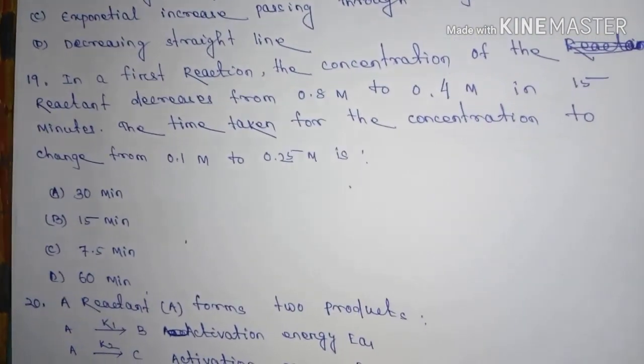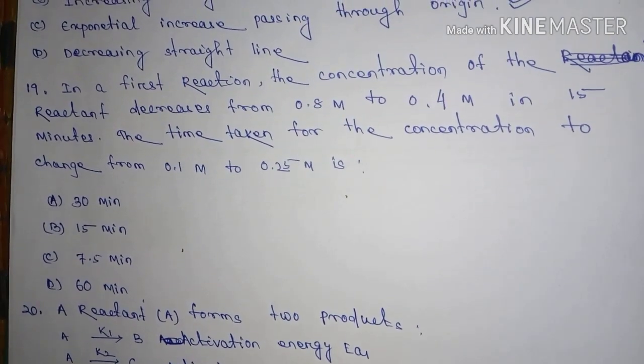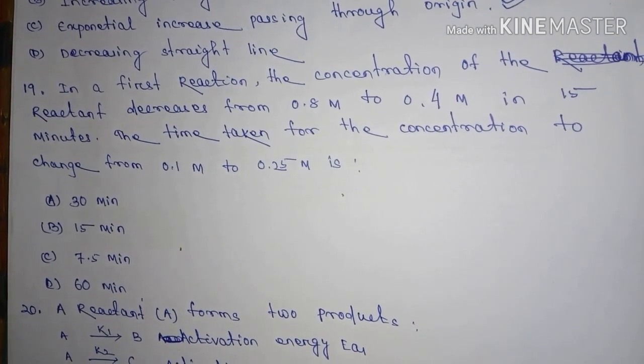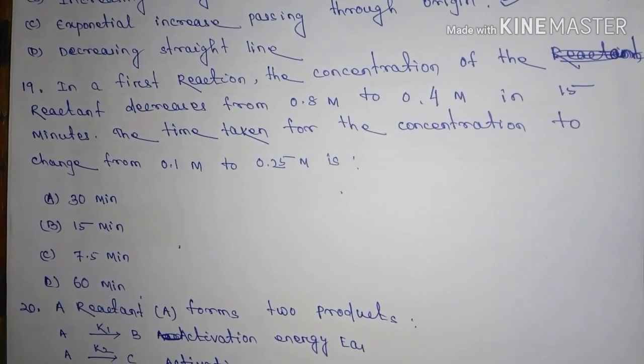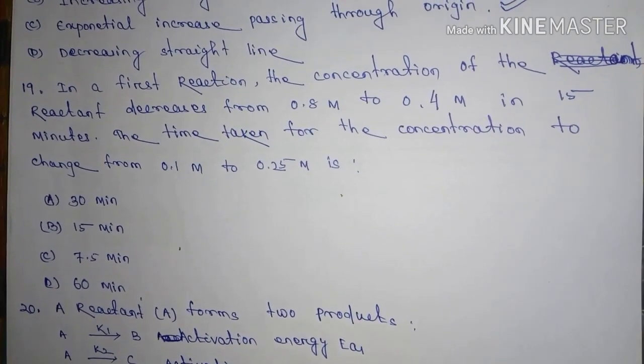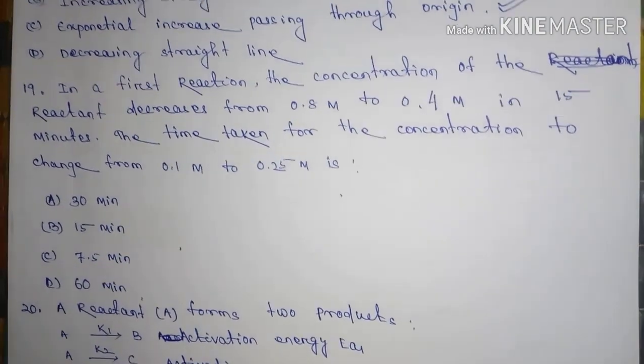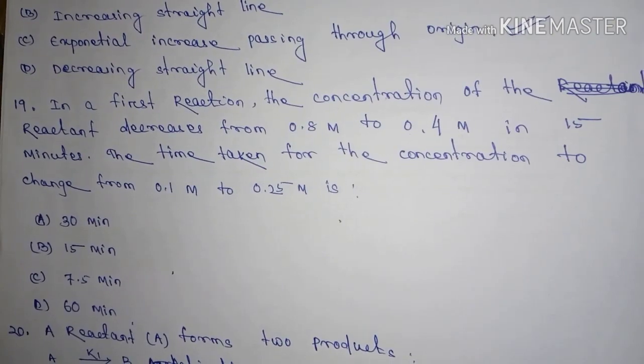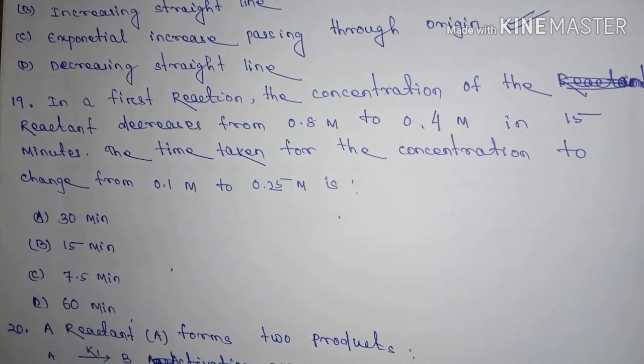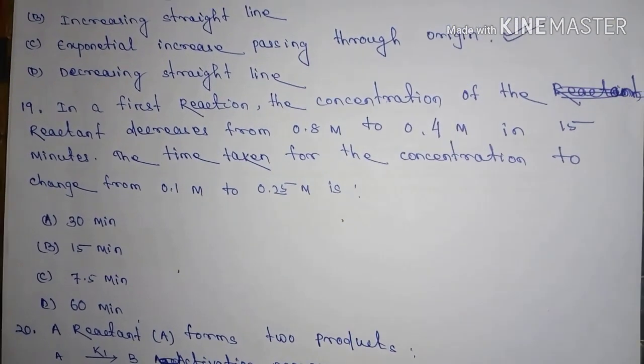Question number 19, in a fast reaction the concentration of the reactant decreases from 0.8 molar to 0.4 molar in 15 minutes. The time taken for the concentration to change from 0.1 mol to 0.25 mol is, the answer is.